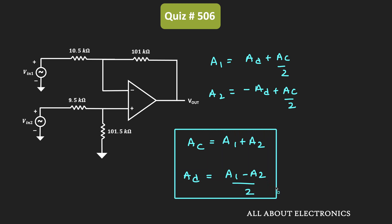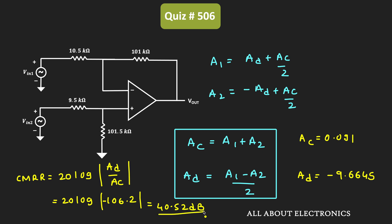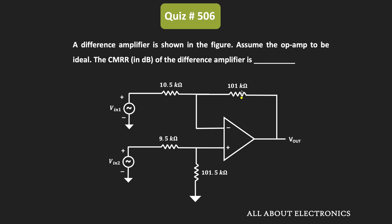Based on those expressions, AC equals 0.091 and AD equals minus 9.6645. The common mode rejection ratio in decibels is 20 log of AD divided by AC, which equals 20 log of 106.2, giving a CMRR of 40.52 dB. Note that based on truncation in the values of AD and AC, your answer may slightly differ, but it should be around 40.52 dB.